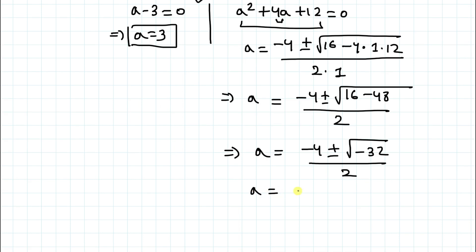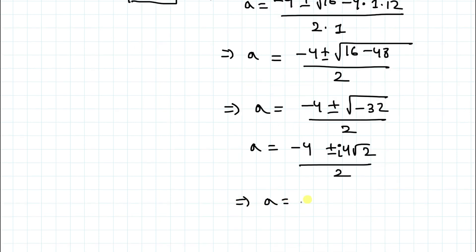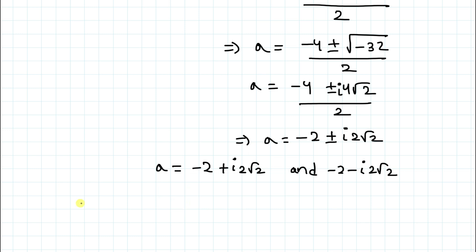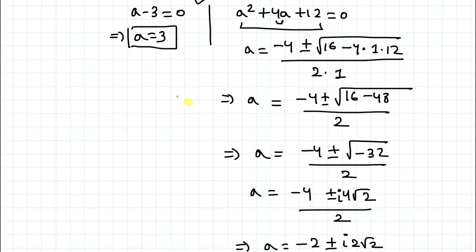Since √(−32) = 4i√2, we get a = (−4 ± 4i√2) / 2, which simplifies to a = −2 ± 2i√2. So the two complex solutions are a = −2 + 2i√2 and a = −2 − 2i√2. Since we are asked to find all real values of 'a', the only real solution is a = 3.